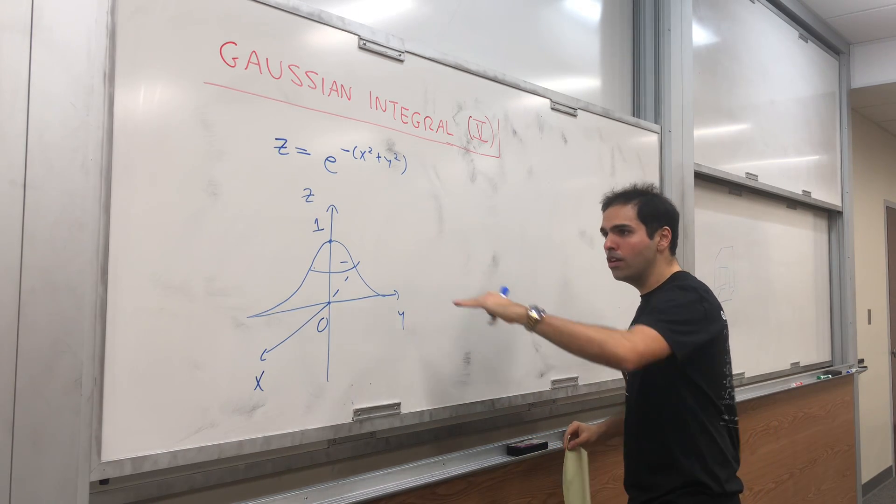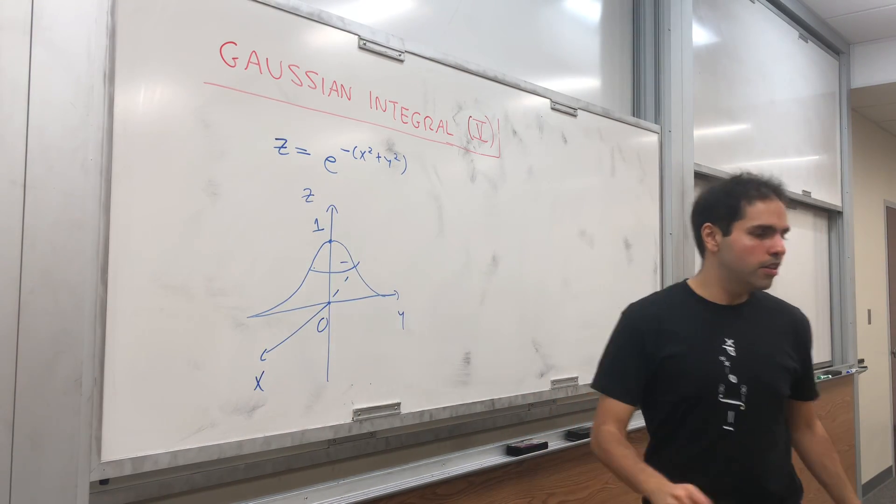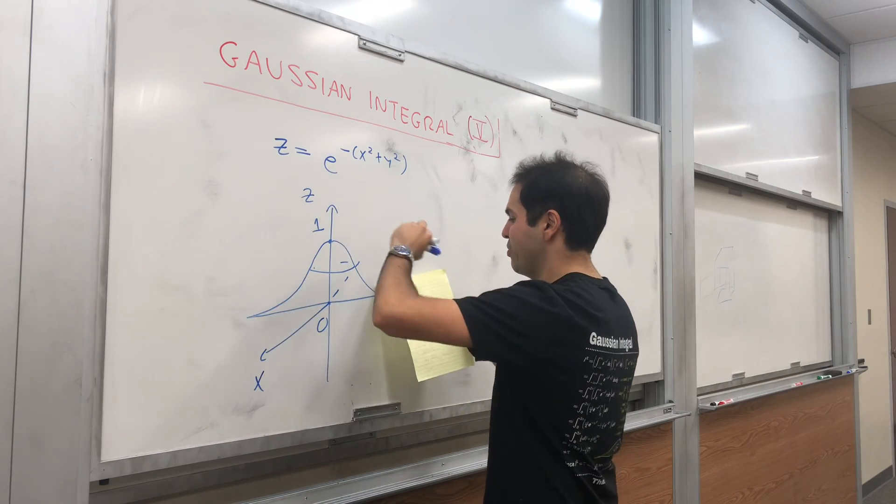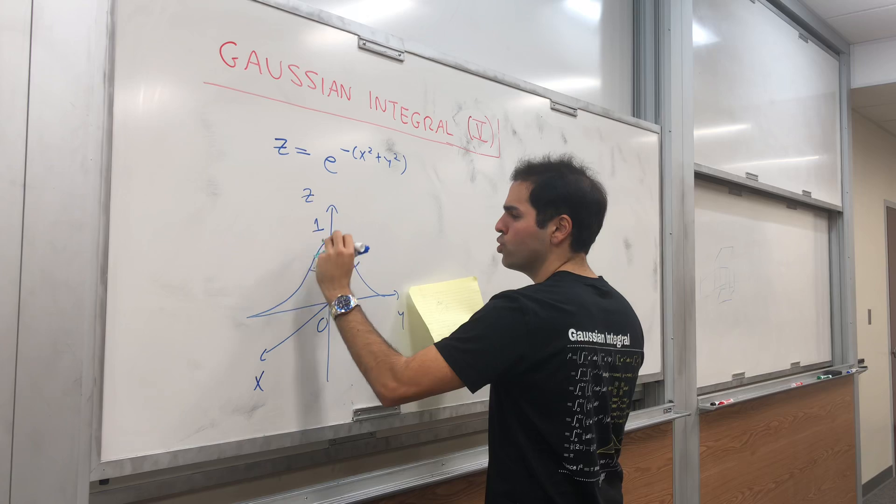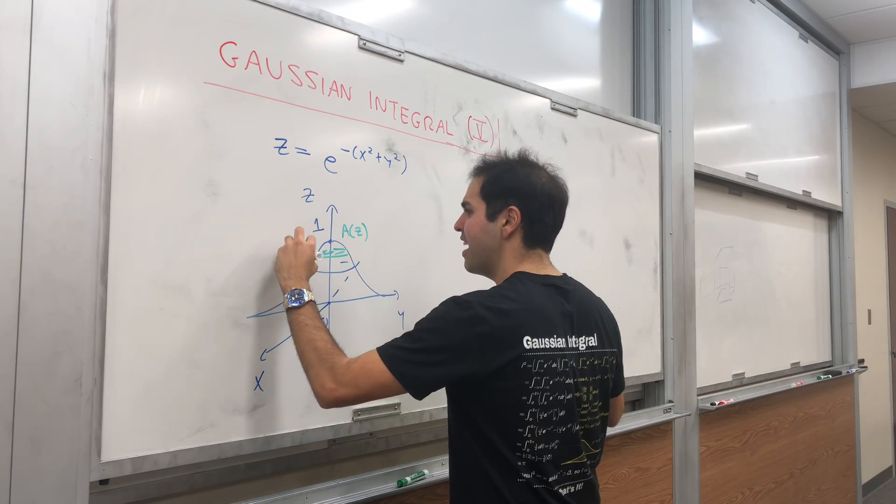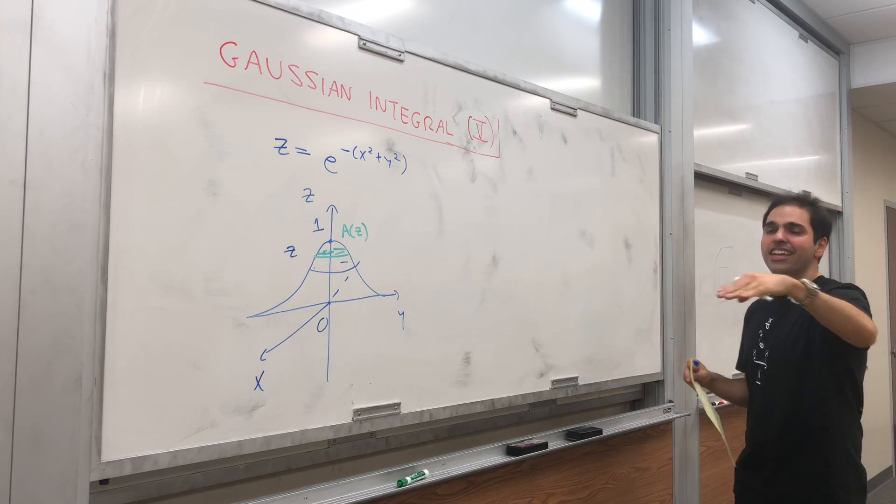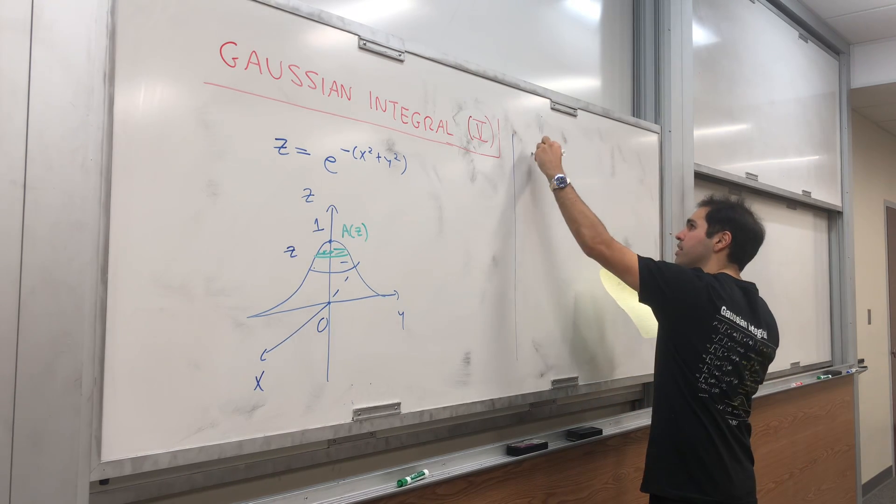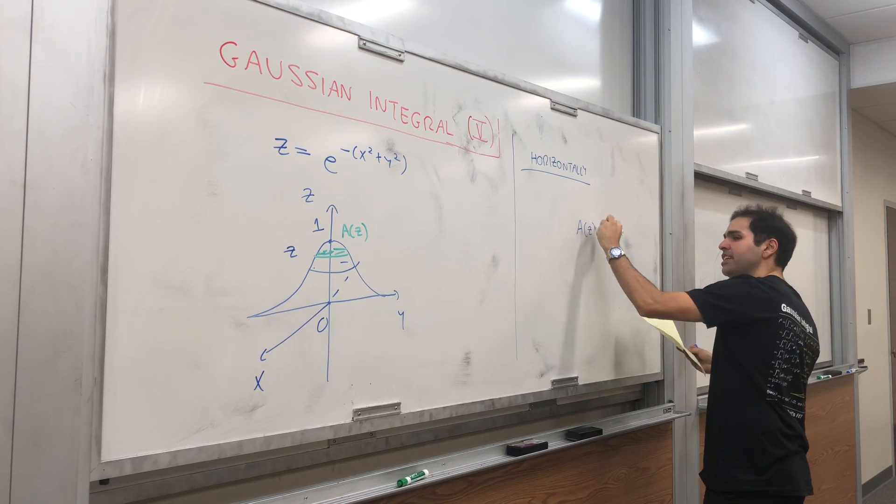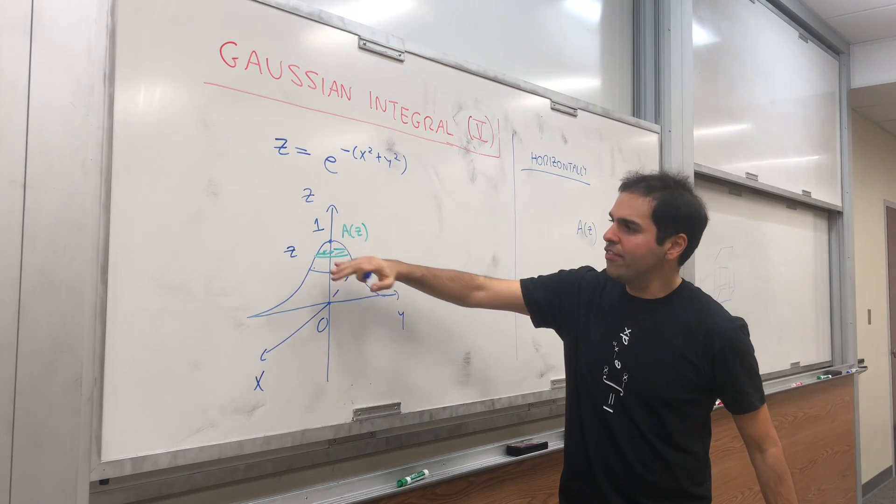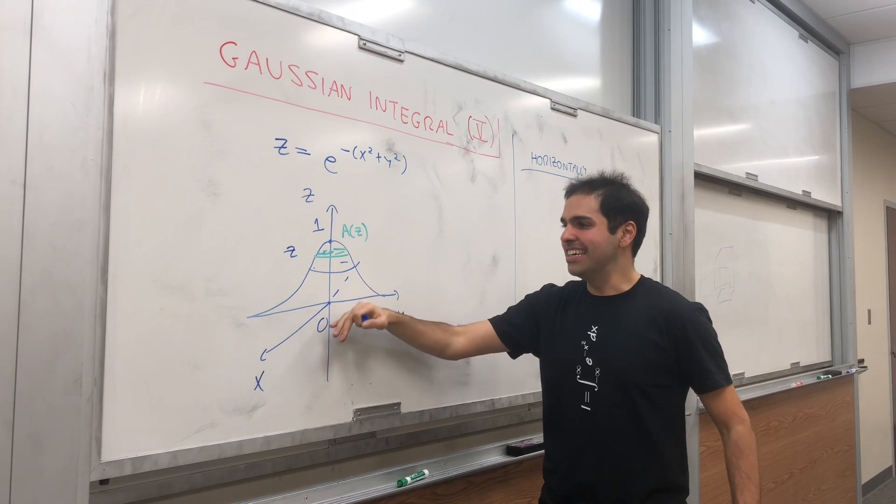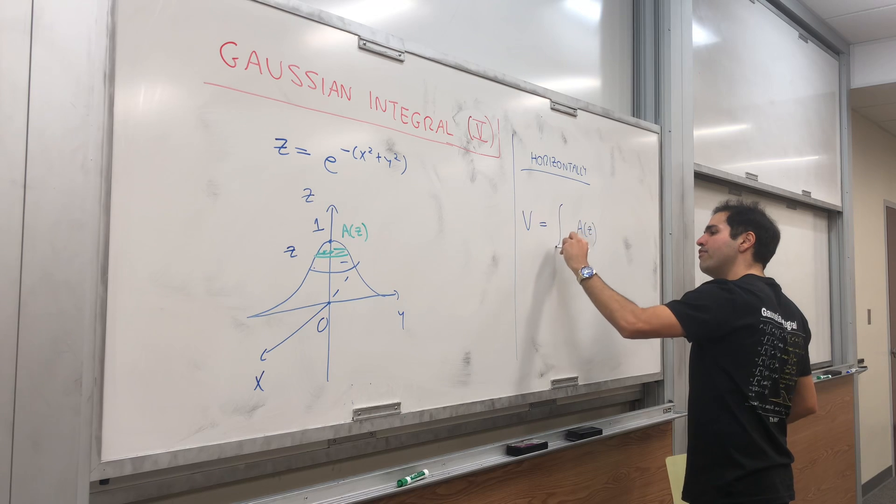First, we'll calculate it using horizontal slices. If you slice it this way, you get a certain object with area A(z). Given z, you slice it at height z and you get a disk. How do you get the volume? By single variable calculus, you integrate all the slices. So the volume is the integral from 0 to 1 of A(z) dz.